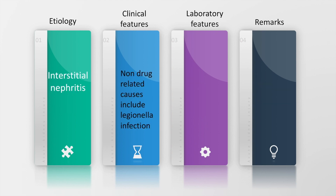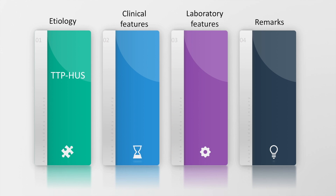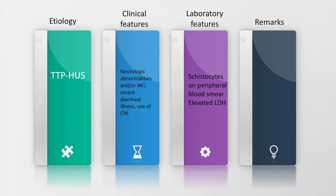Intrinsic AKI may also be due to interstitial nephritis; non-drug related causes include Legionella infection. The patient may again have eosinophilia and sterile pyuria, and kidney biopsy may be required. TTP-HUS may also present with neurological abnormalities and AKI with the background of a recent diarrheal illness, specific to hemolytic uremic syndrome. Laboratory features may show schistocytes on peripheral blood smear and elevated LDH denoting ongoing hemolysis.